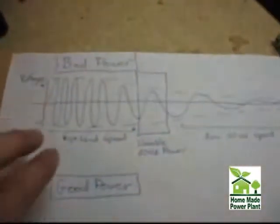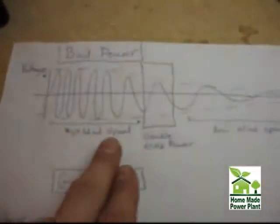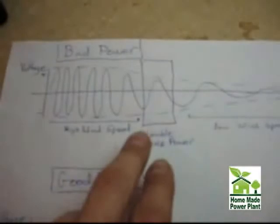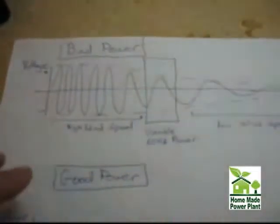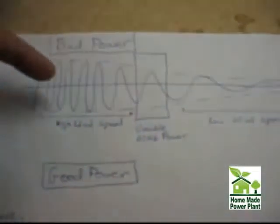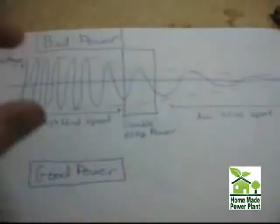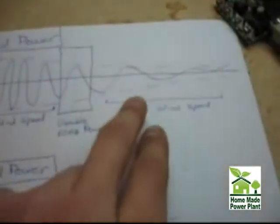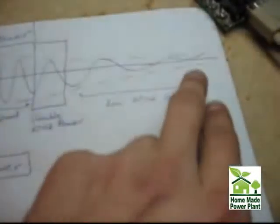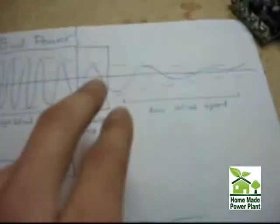To help simplify this a little bit, you'll look at the high wind speed. This is the voltage signal that you would get off of the wind turbine during a high wind speed period. There's a high frequency. That means the voltage is changing polarity very quickly. And as the wind slows down, the frequency decreases and the amplitude decreases.